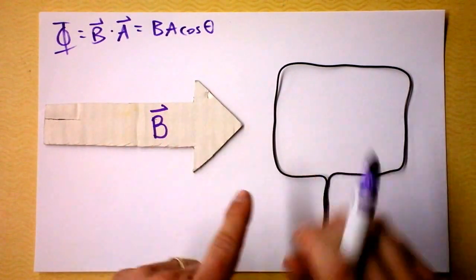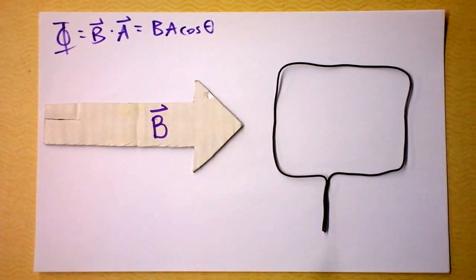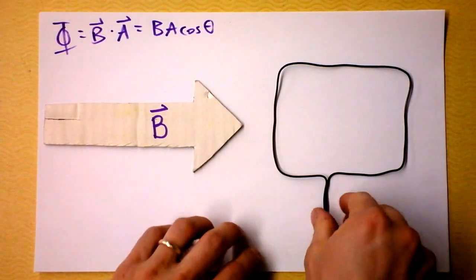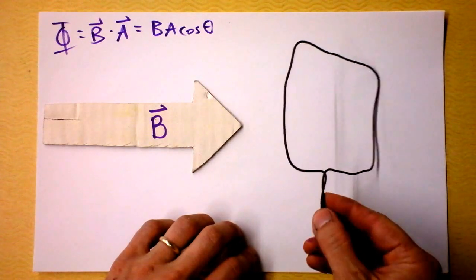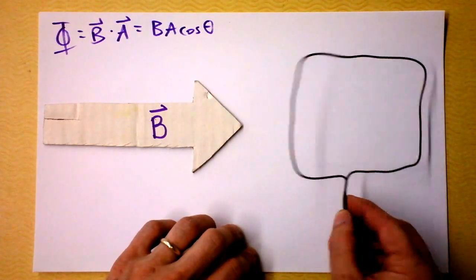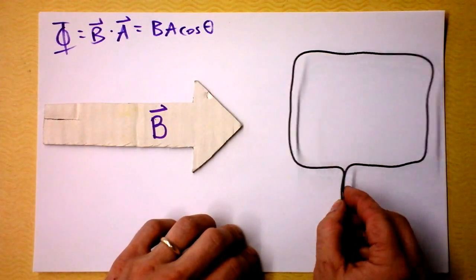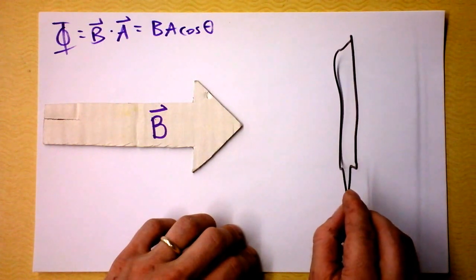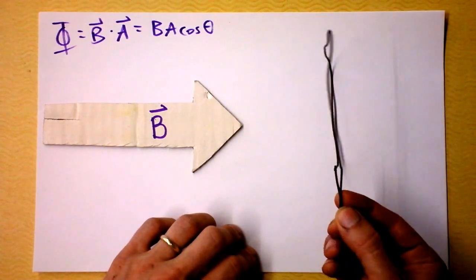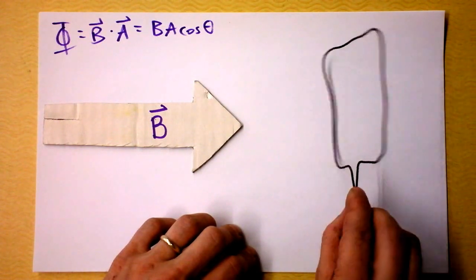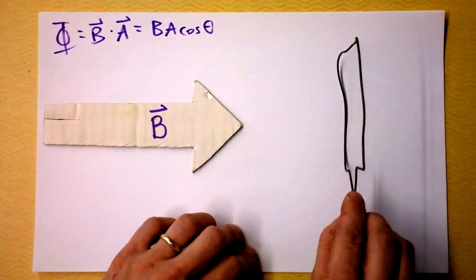So right now, in this orientation, theta is equal to 90 degrees. Cosine of 90 is zero. So we don't have any flux in this orientation. But if I rotate like this, I've gotten maximum flux. If I rotate like this, I've gotten minimum flux. But this is zero. This is big flux. It's just negative B times A.